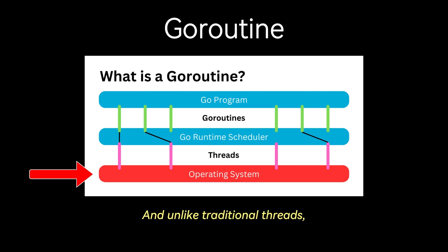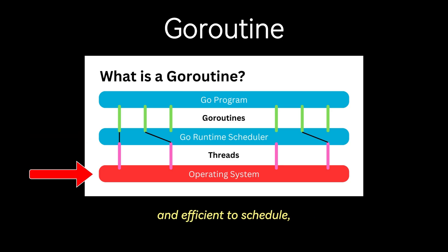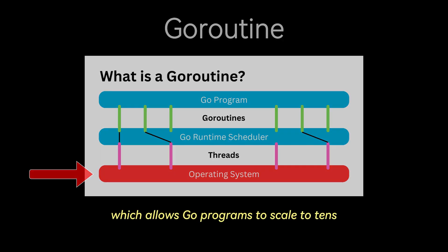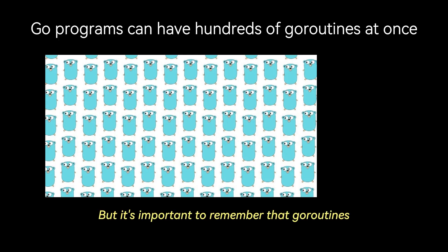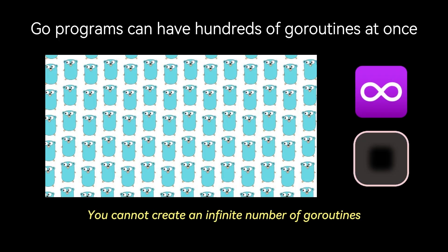Unlike traditional threads, goroutines are cheap to create and efficient to schedule, which allows Go programs to scale to tens or even hundreds of thousands of concurrent goroutines. But it's important to remember that goroutines do have a finite cost in terms of memory footprint — you cannot create an infinite number of goroutines.